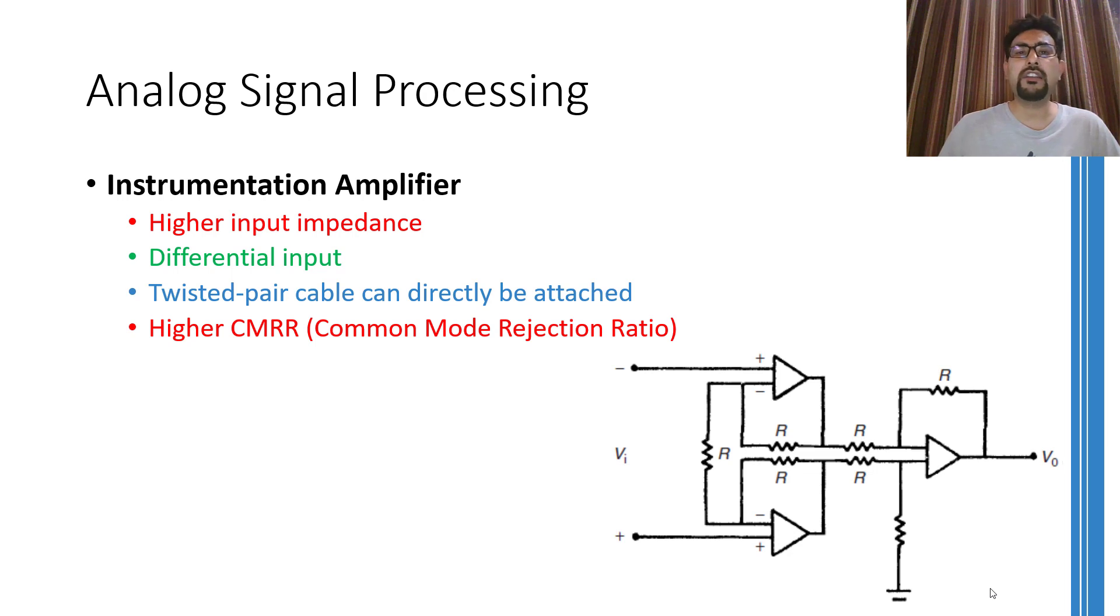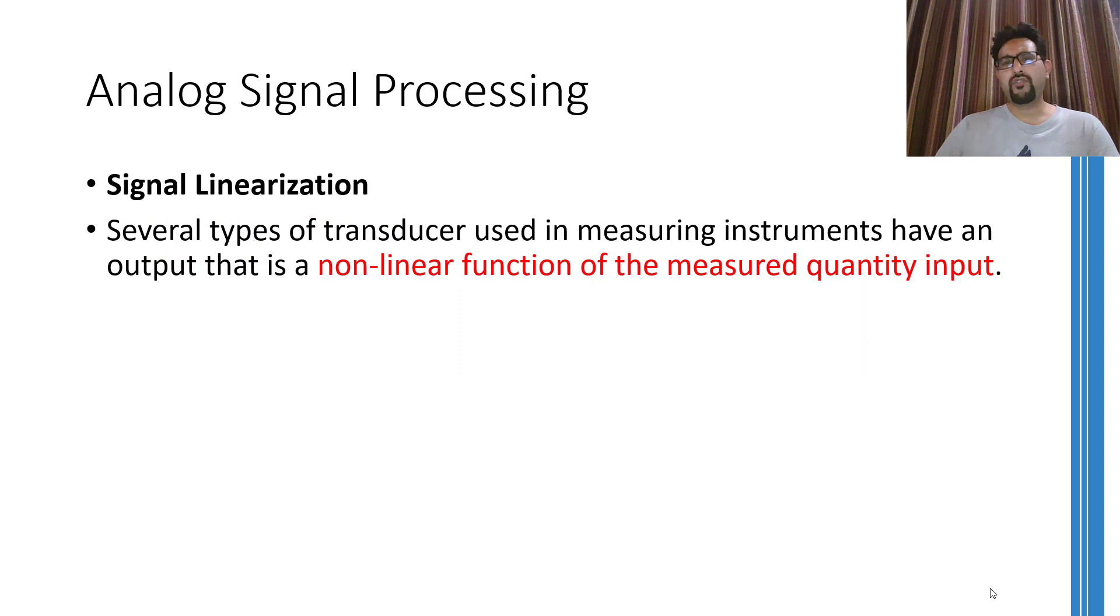However, if you simply need the difference of any two signals not possibly coming from a twisted pair cable, then a differential amplifier can be used. In some practical transducers, it is a common problem that they generate a nonlinear output. The nonlinear output can have various forms and one of the forms is an exponential output. An exponential output is attributed especially to thermocouples.